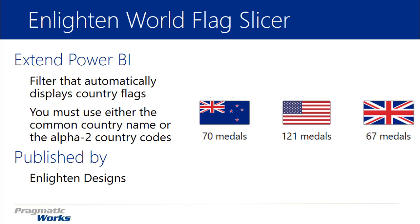You also have the ability to show and display a metric. If you have some kind of a metric value, you can display those below any of the flags as well. You can see that here where it says 70 medals, 121 medals, 67 medals — those can be displayed right below a slicer.